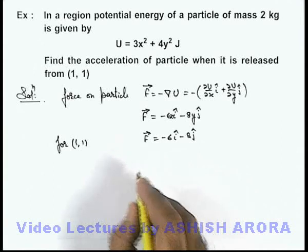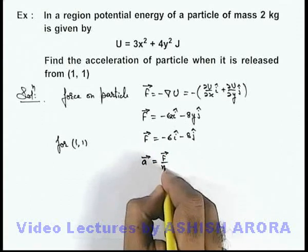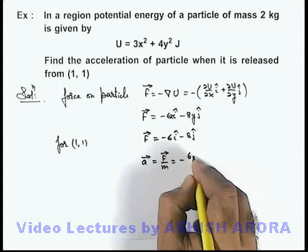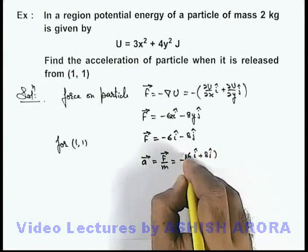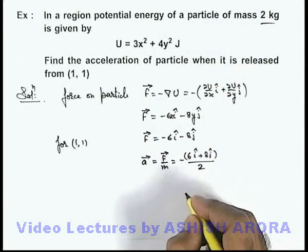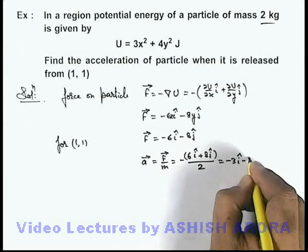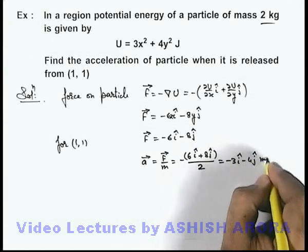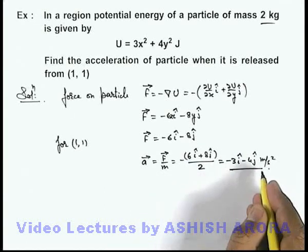And in this situation if we find the acceleration of particle, that will be F/m. So this is -6 î - 8 ĵ divided by the mass of particle, which is 2 kilograms. So this will be -3 î - 4 ĵ meters per second squared - that is the acceleration of the particle.